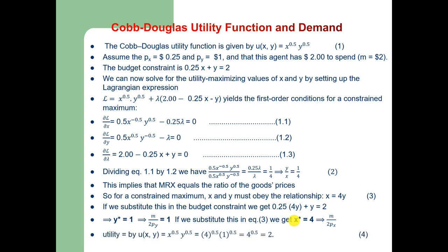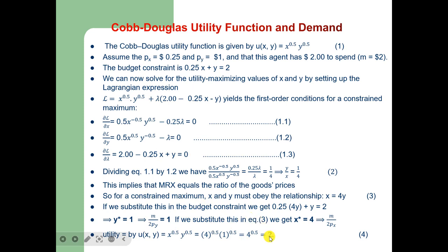Substituting these optimal values x* = 4 and y* = 1 into the original utility function gives u = 2. So if this consumer spends the entire budget on x and y, the constrained maximization gives a maximum utility value of 2.